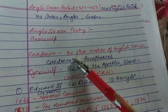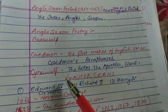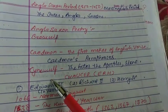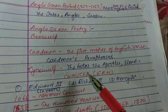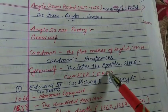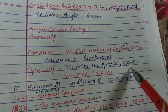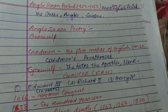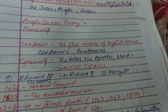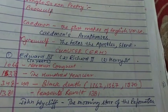Caedmon was the first maker of English words and he wrote Caedmon's Paraphrases. Cynewulf wrote Elene, The Fates of the Apostles, and related works — these are important points about writers from that time.